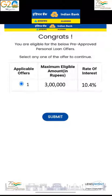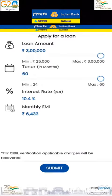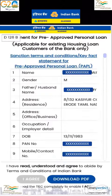Click on submit. Select the loan amount required and repayment tenor of your wish. The applicable interest rate and EMI will be displayed depending on the loan amount selected. Now all the sanctioned terms and conditions will be displayed.